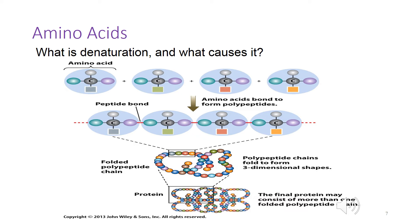Amino acids are linked with peptide bonds to form proteins. Condensation reactions connect amino acids to form dipeptides, tripeptides, and polypeptides, or proteins. The sequencing and shape of amino acids determines the type of protein and its function. Polypeptide chains can twist and fold into a variety of shapes based on the charge and water-loving or water-repelling nature of the side group.